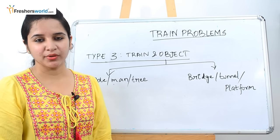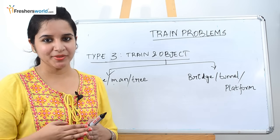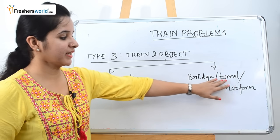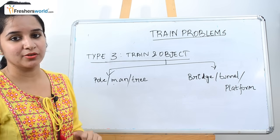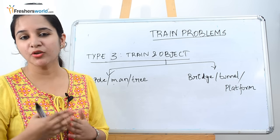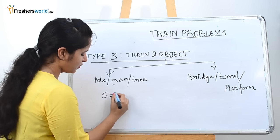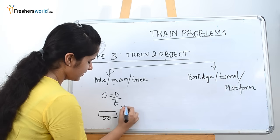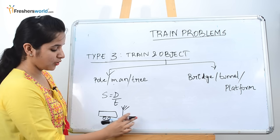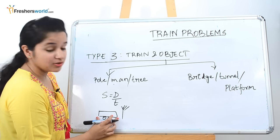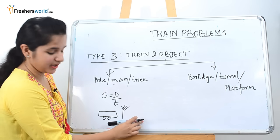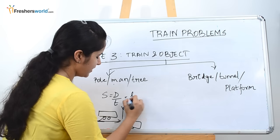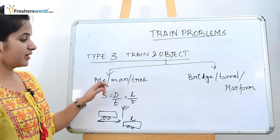Type 3 is train and an object. There are two sub-types: one is a train crossing a pole, a man, or a tree; the other is a bridge, tunnel, or platform. For a train crossing a pole or man or tree, the distance covered by the train equals the length of the train itself — the train has fully crossed when its rear end passes the object. So: speed = length of train / time taken.